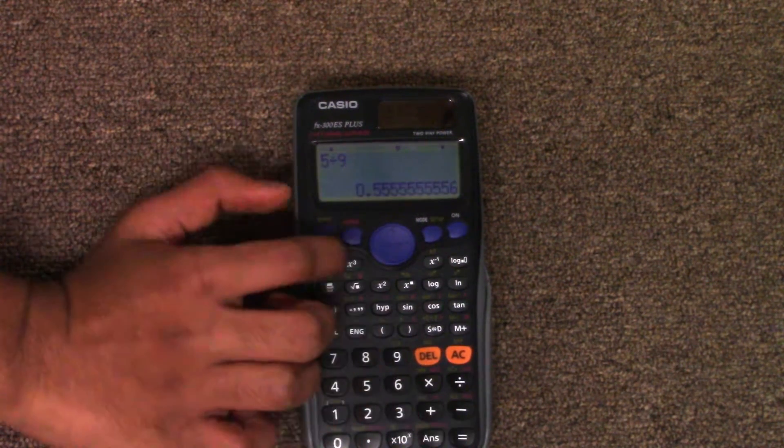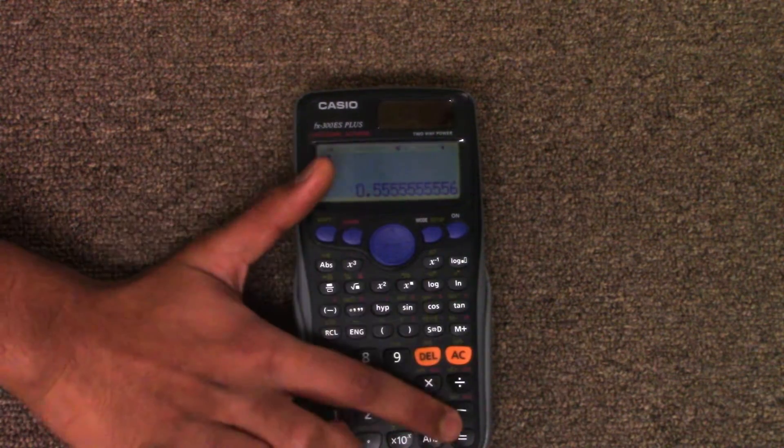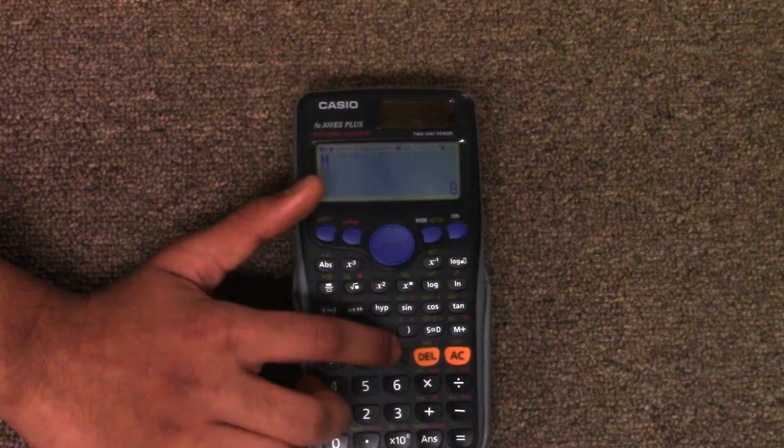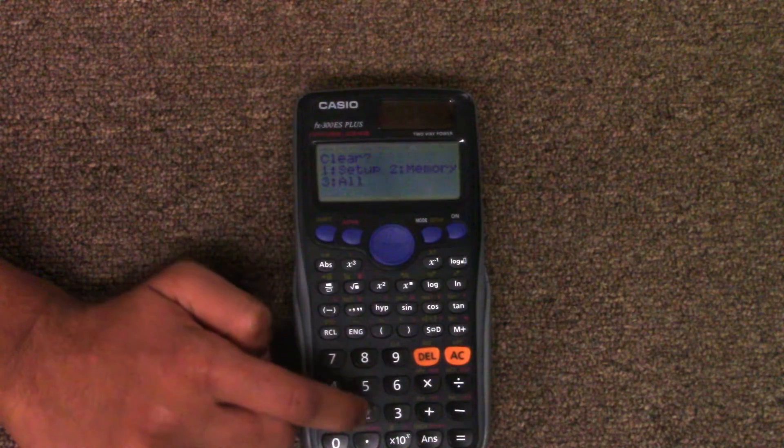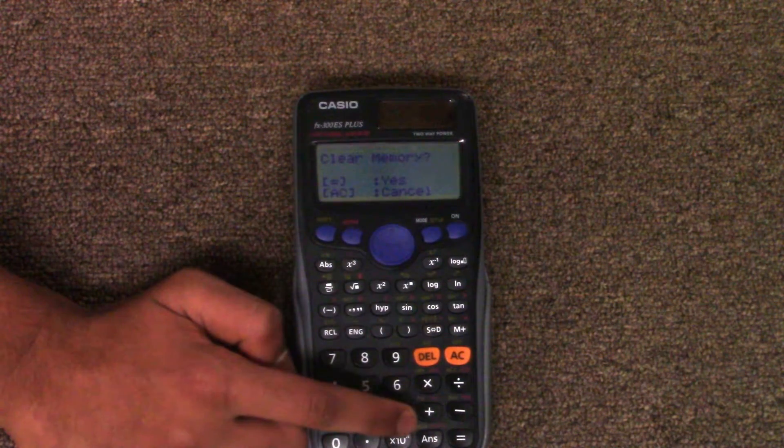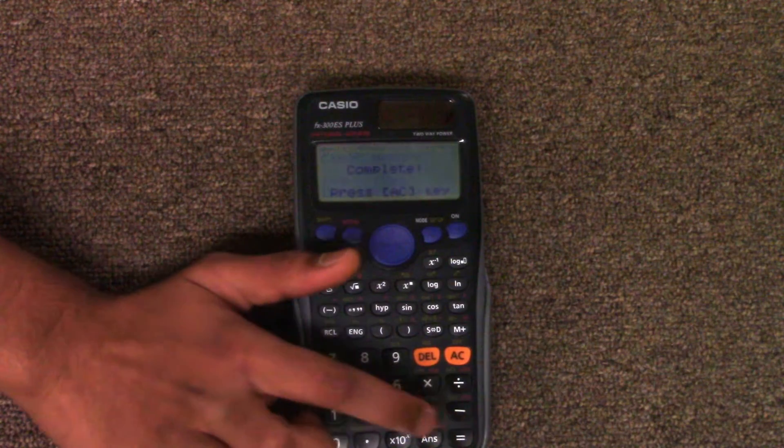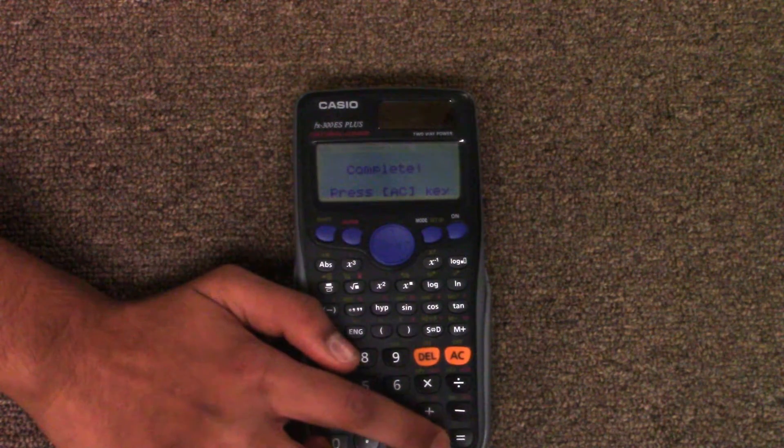As you can see here, we've changed the setup yet again and have something in the memory. To clear just the memory, press shift 9 and then press 2. Press equal or AC to cancel, then press AC again to finish.